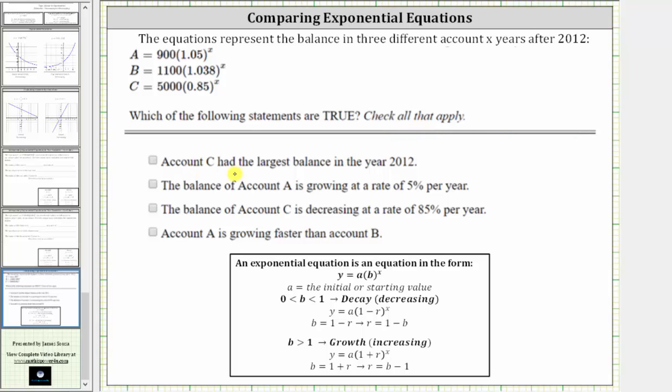The first statement is account C had the largest balance in the year 2012. 2012 is the year the accounts were opened, and therefore we can determine which account had the largest balance in the year 2012 by looking at the value of A. With the equation in the form y equals A times B raised to the power of x, A is the initial or starting value.